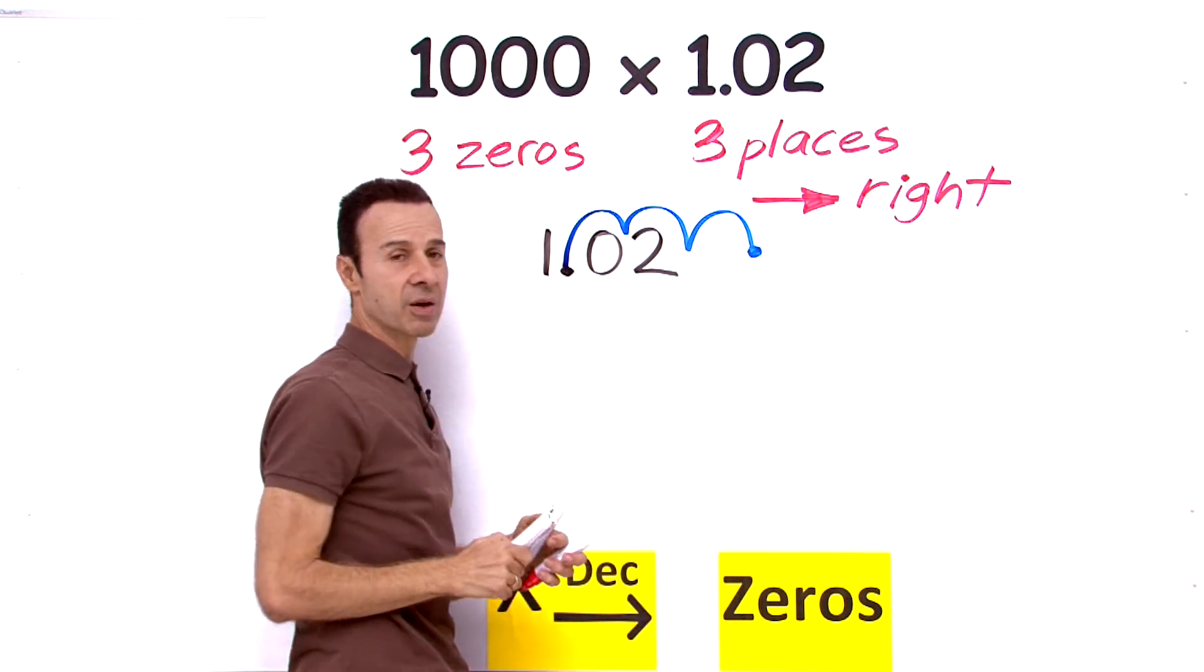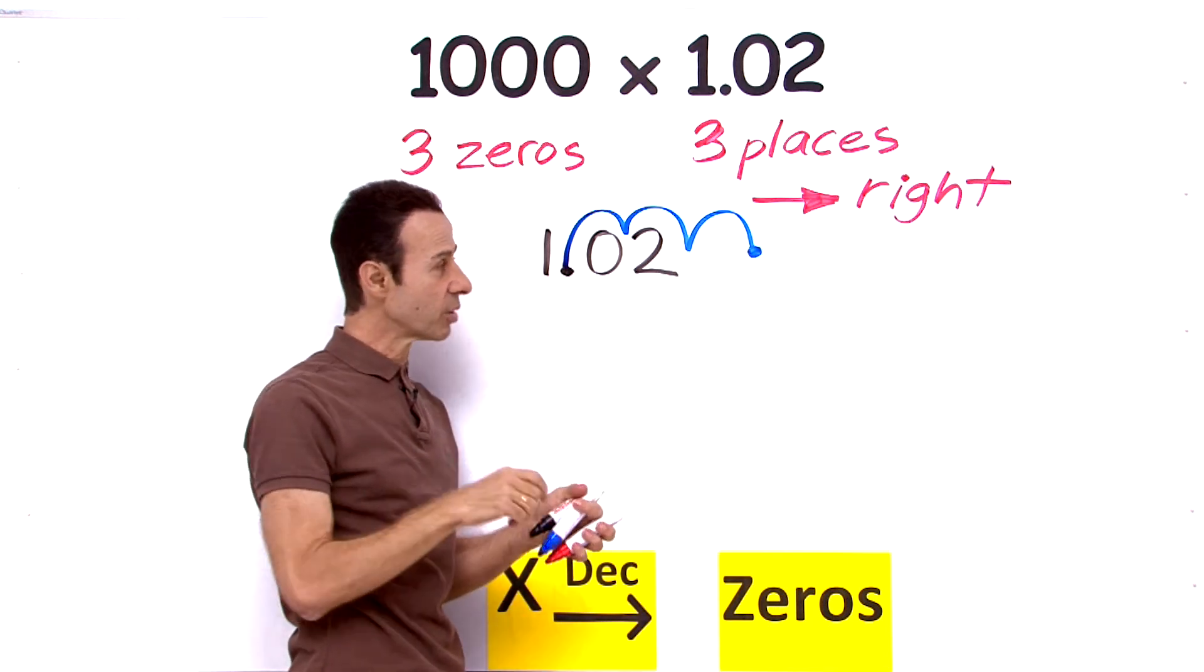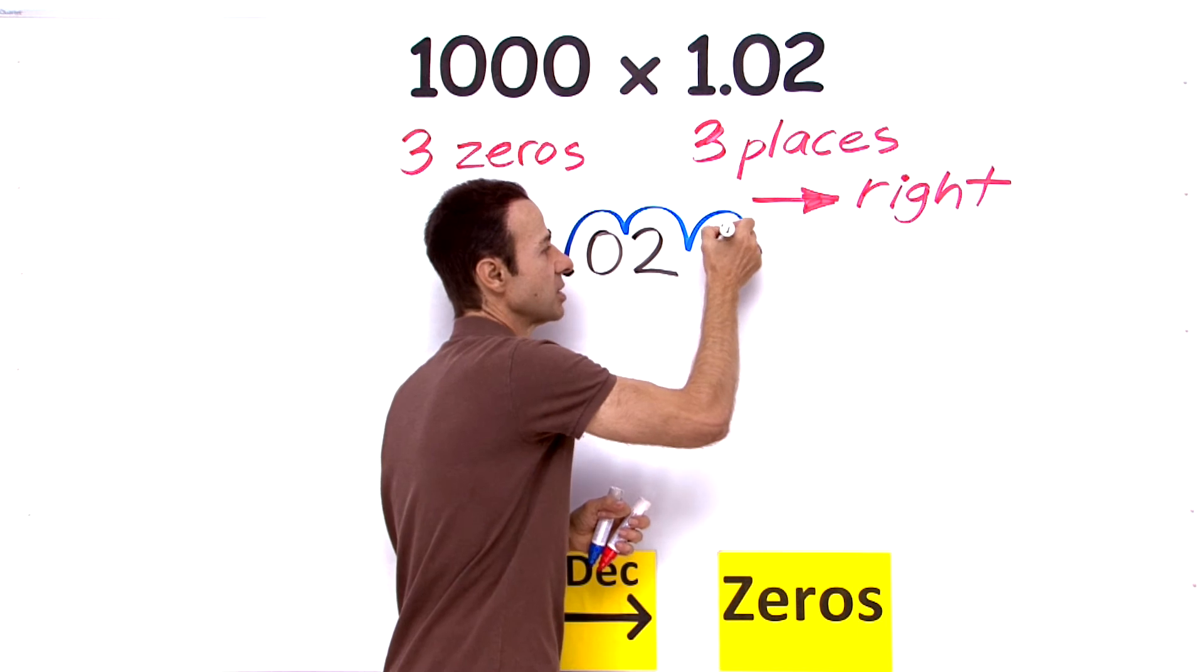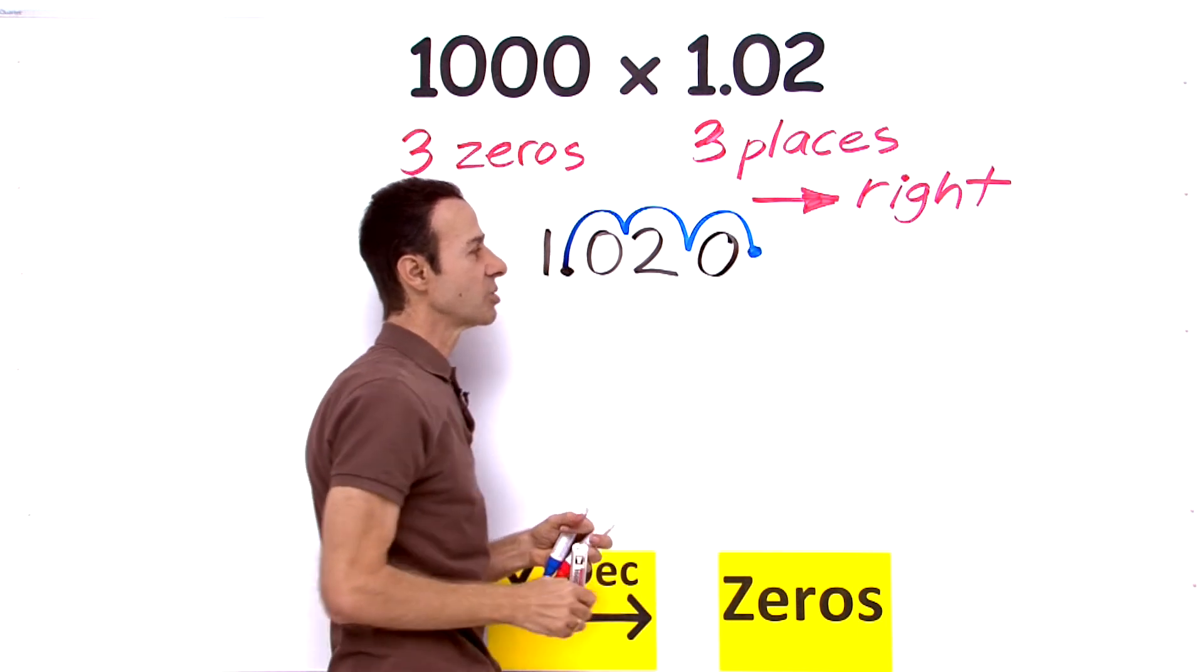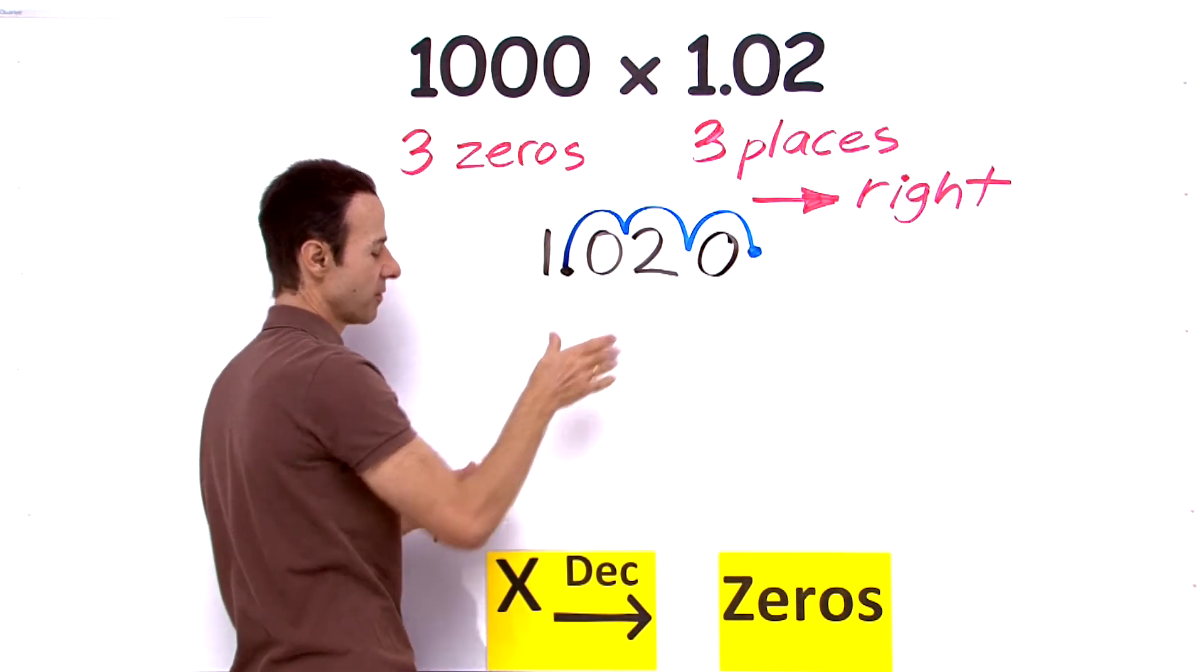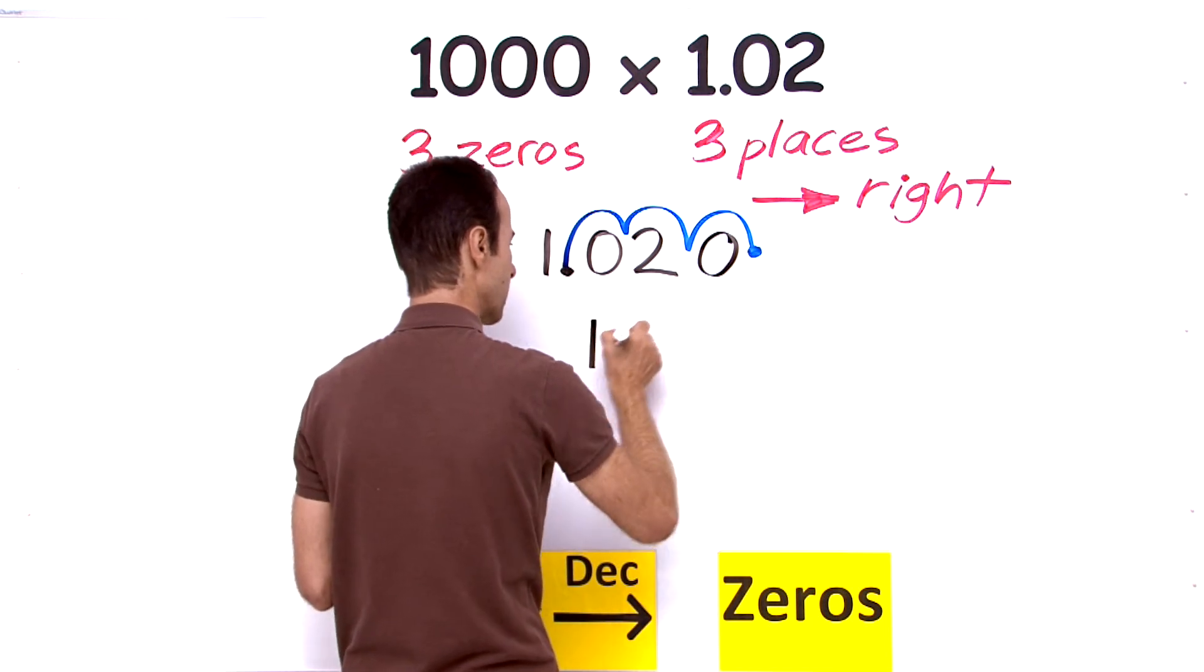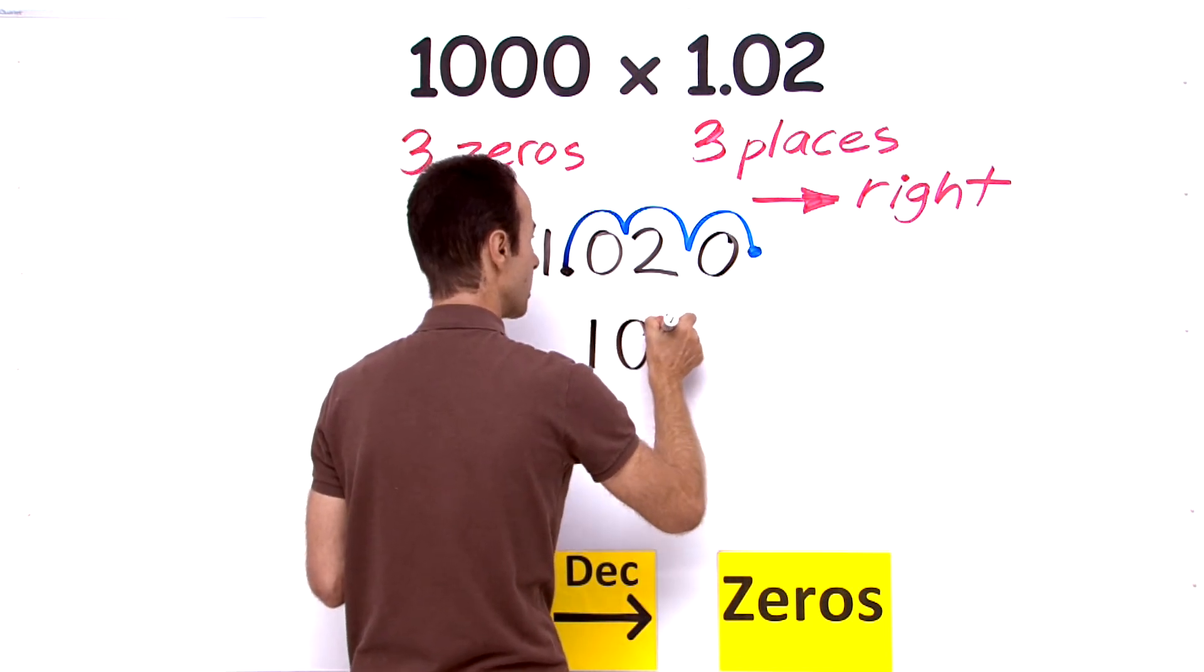So now we have a spot there with emptiness. There is nothing there, so we can replace that with a zero. If you ever see an empty spot, you just put a zero there. So now this becomes one, zero, two.